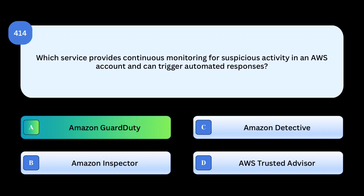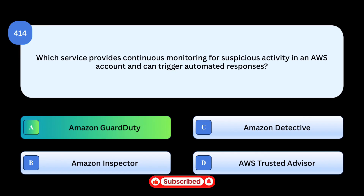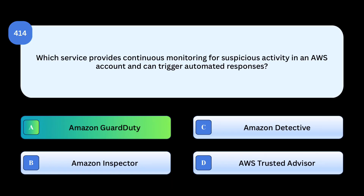Correct answer: Amazon GuardDuty. GuardDuty uses machine learning and threat intelligence feeds to detect suspicious behavior and supports automated remediation. Why others are incorrect: Amazon Inspector focuses on software vulnerability scanning. Amazon Detective helps investigate and analyze security findings, not real-time detection. AWS Trusted Advisor recommends best practices but doesn't detect threats.